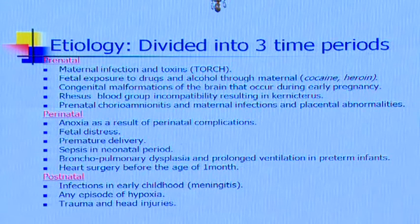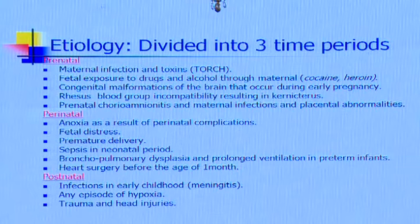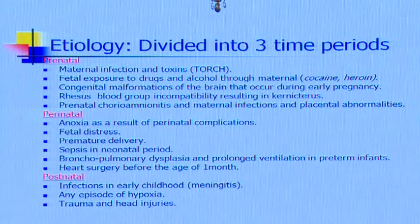Of the known etiological factors, you can divide the etiology into three stages. Prenatal causes include maternal infections, fetal exposure to drugs and alcohol, congenital malformations, blood group incompatibility, and also prenatal chorioamnionitis and maternal infections.